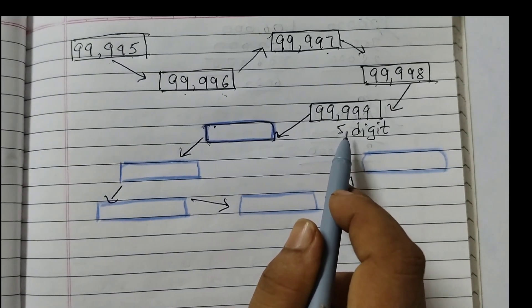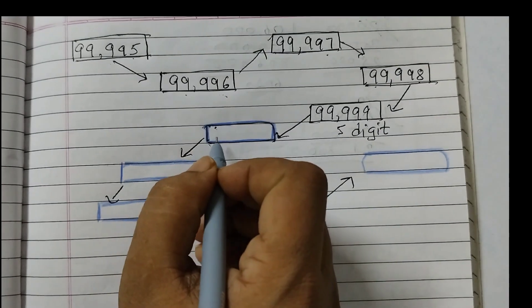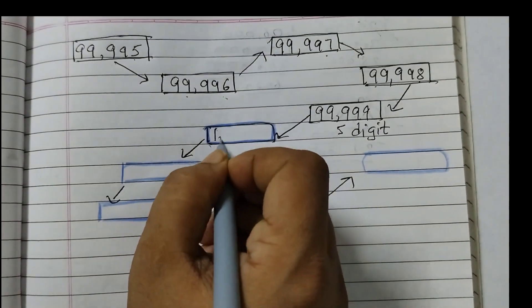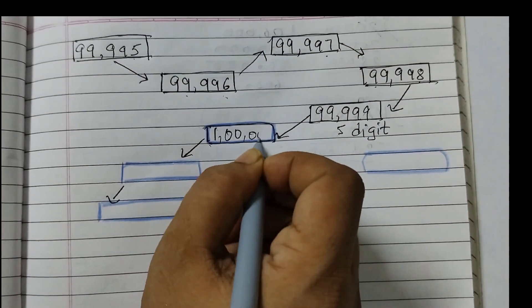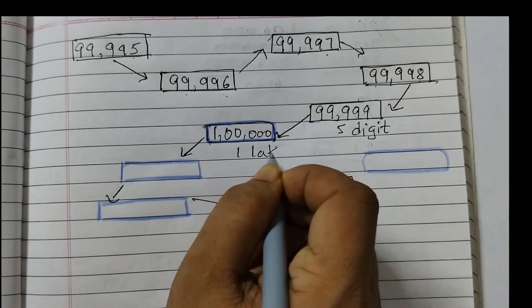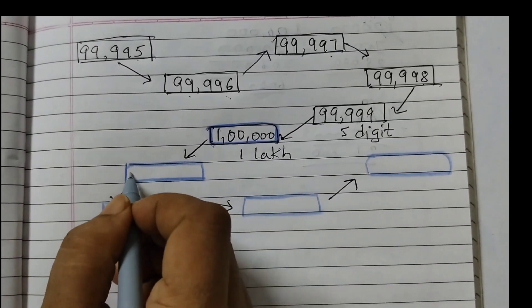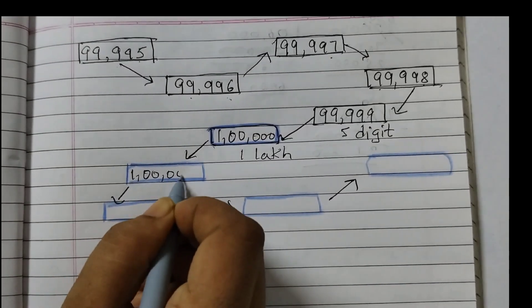Now when we add 1 to this, we would get the smallest 6 digit number. Which is 1 lakh. So 1 and then 5 zeros. This is 1 lakh. We shall continue the pattern. Add 1 to this.